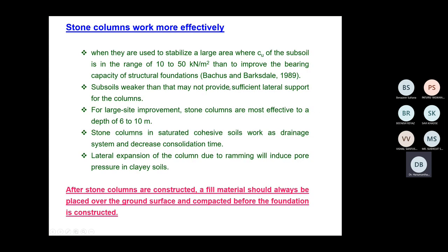Stone columns are particularly useful when the undrained shear strength of the soil is very low, in the range of 10 to 50 kilopascals. If you calculate the bearing capacity of soil with such low undrained shear strength, you hardly get anything. When soils are unable to bear any load, we can use stone columns. Alternatively, subsoils weaker than that may not provide sufficient lateral support for the columns — in those situations, stone columns can still be recommended.